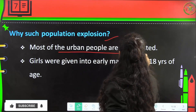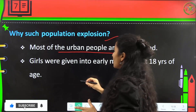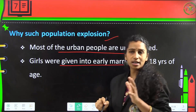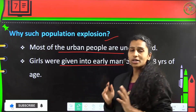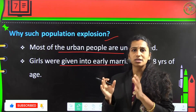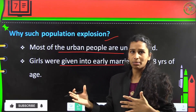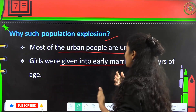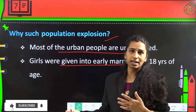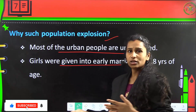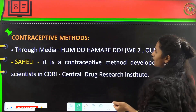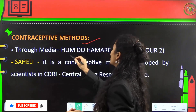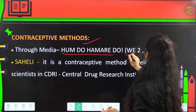Most of the urban population is uneducated, and girls are given into early marriages at the age of 18. When they marry early, they begin reproduction at an earlier age, and this has ultimately led to the population explosion.